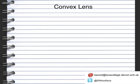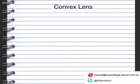First of all, we're going to look at what a convex lens actually is. If we look at this diagram here, this is what a convex lens looks like. We've got this basic shape where the glass is actually going outwards.